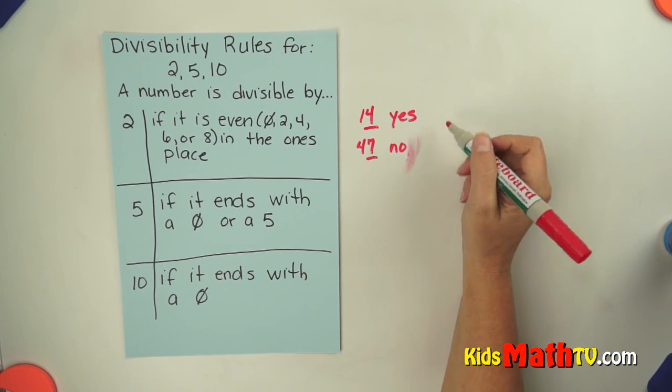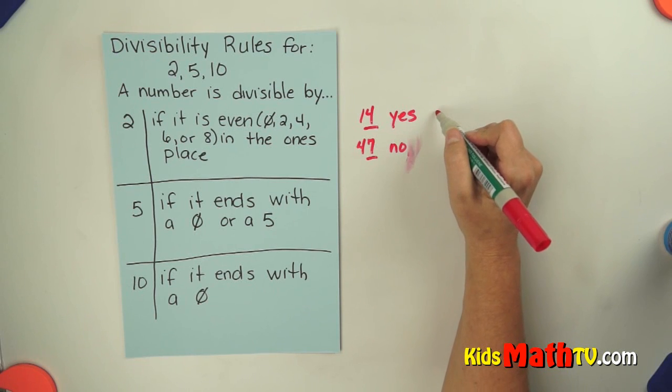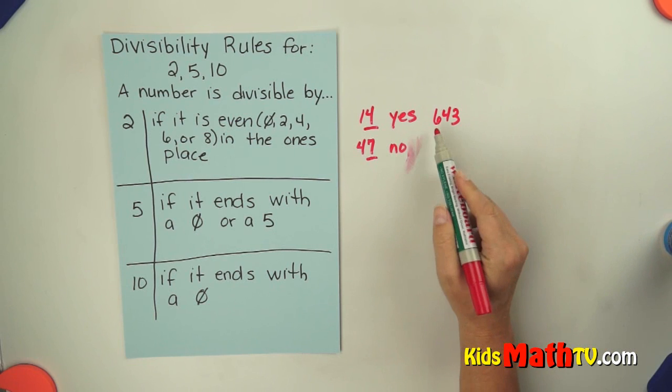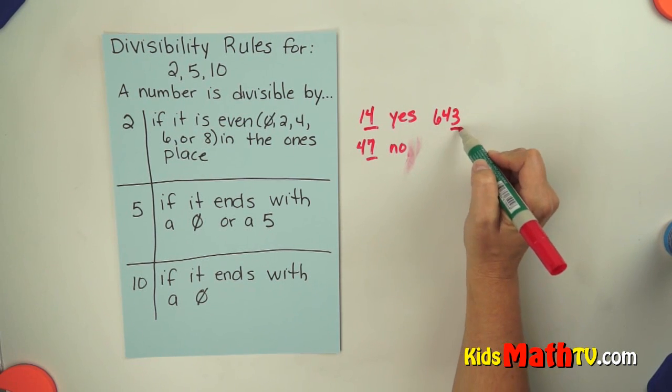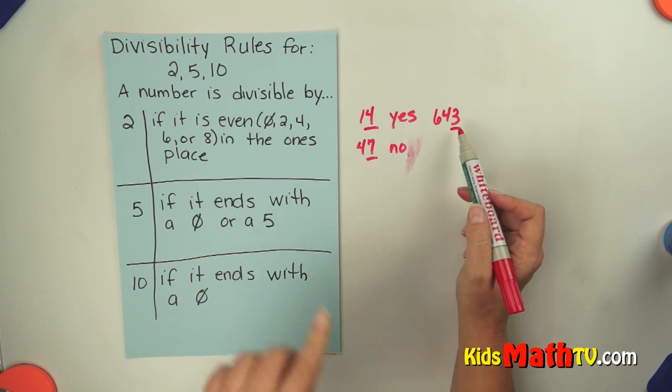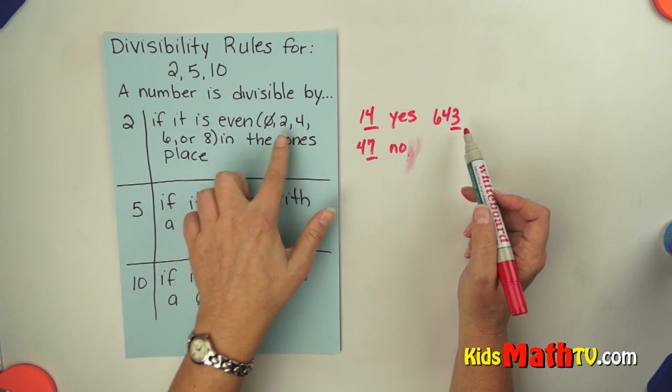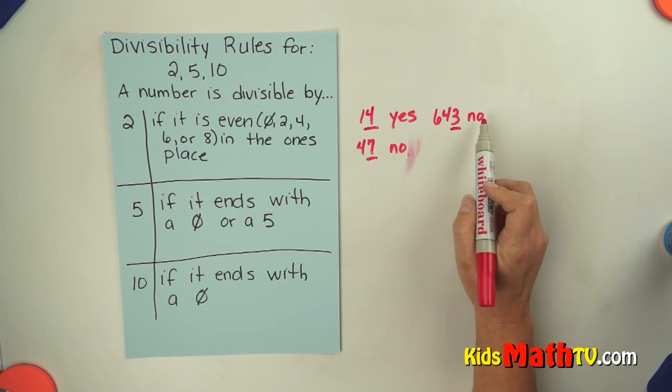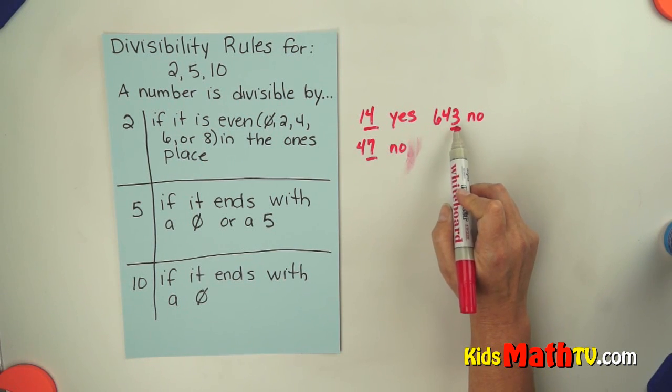If we look at another number such as 643, we look at the ones place. The number in the ones place is a 3. We look at our list. It is not on our list, so no, 643 is not divisible by 2. It is not an even number.